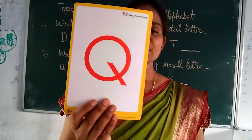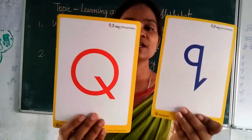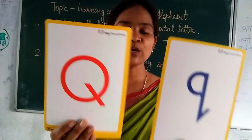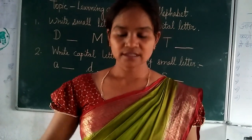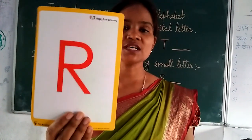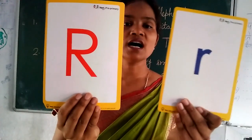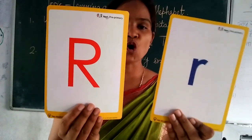Capital Q. Small Q. Q for queen. Capital R. Small R. R for rose.